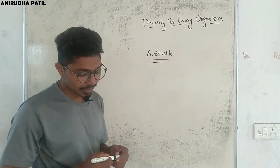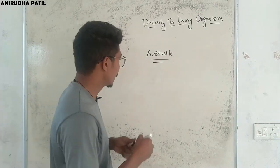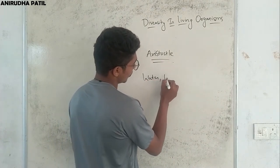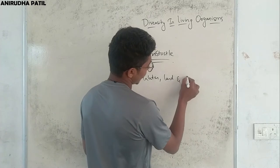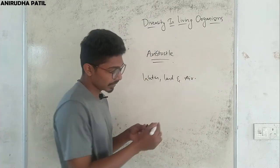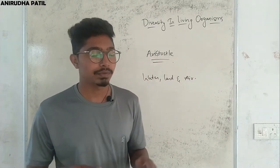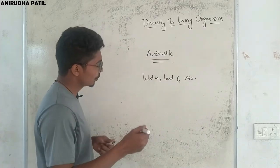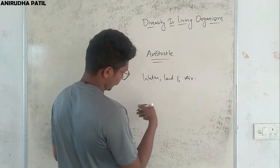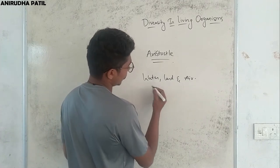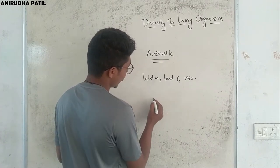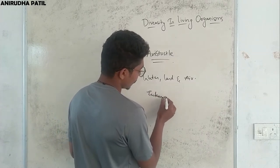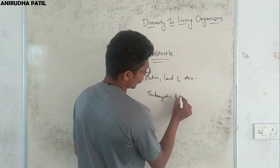Aristotle classified organisms depending upon whether they live on water, land, or air. But this classification was not enough to understand organisms properly. So in the later period, people classified organisms based upon cells — eukaryotic and prokaryotic.